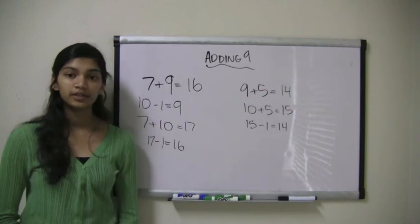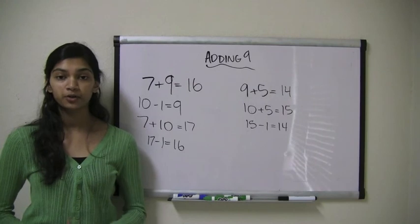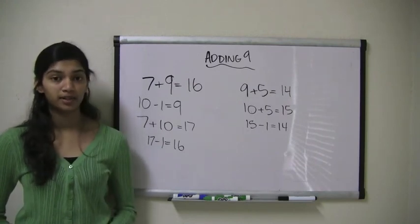The reason why this is so much easier is that we're adding a whole number, 10, and subtracting 1, both which are much easier than adding a big number like 9.